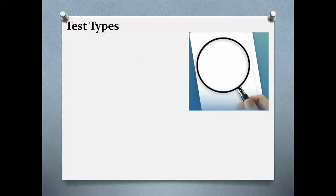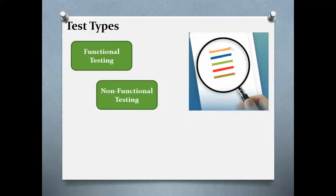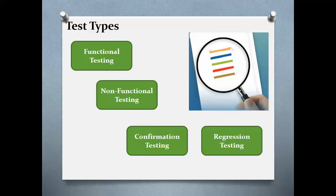You define test objectives for various levels of development. There are various test types to test a component or software. These test types are typically a set of test activities which focus on a specific test objective. Different test types enable you to meet different types of testing. The most common types of testing are functional testing, non-functional testing, confirmation testing, and regression testing.